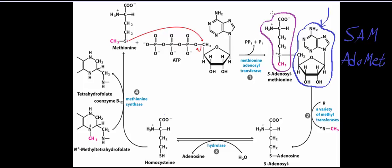Methionine is in a covalent bond with adenosine through the 5' part of adenosine and through the sulfur of methionine. Notice that this sulfur has a positive charge on it. Even though sulfur can handle a positive charge better than oxygen, it still doesn't really like it, so the methyl group situated on the sulfur becomes a really hot electrophile that nucleophiles like to attack. When a nucleophile attacks that methyl group, it forces the rest of that molecule to be a good leaving group.